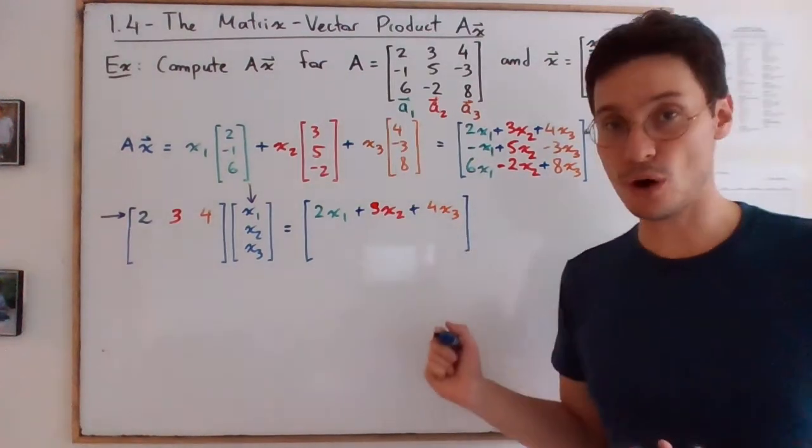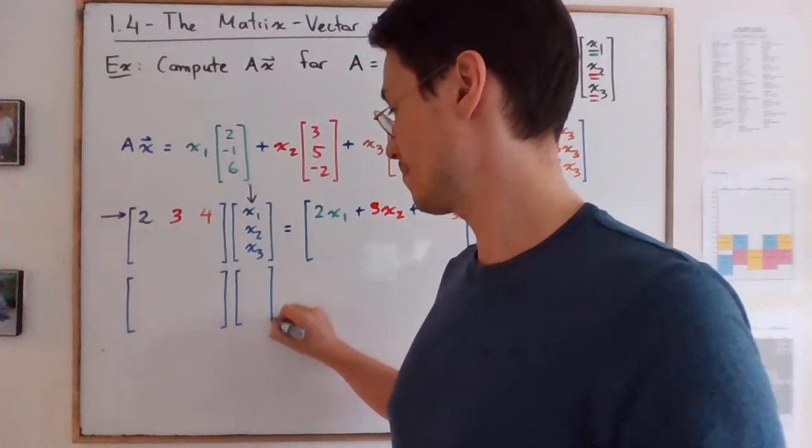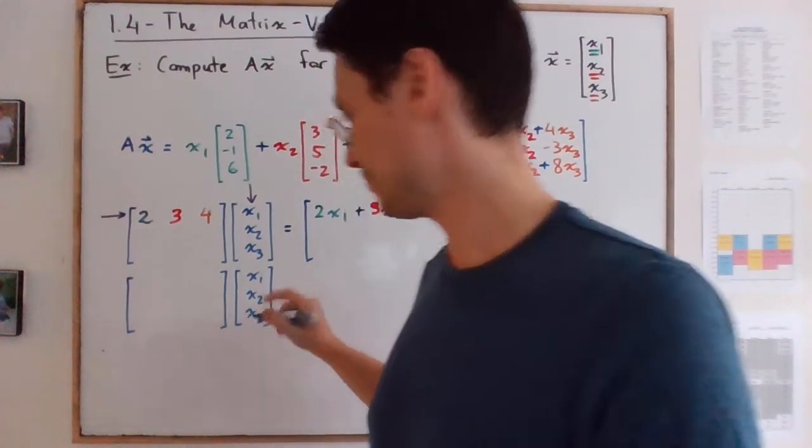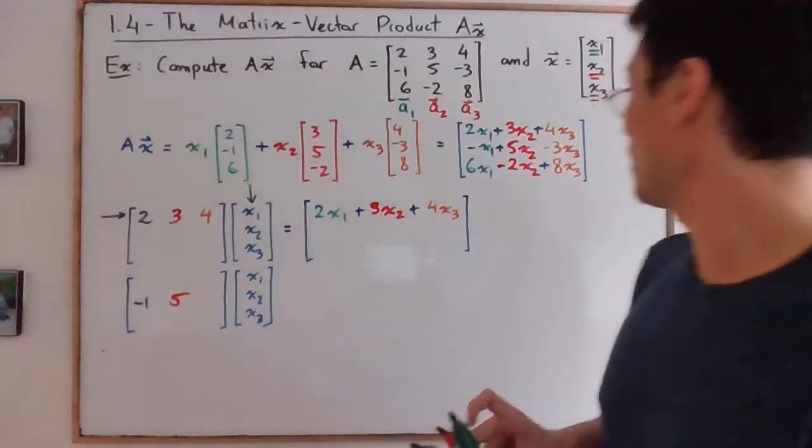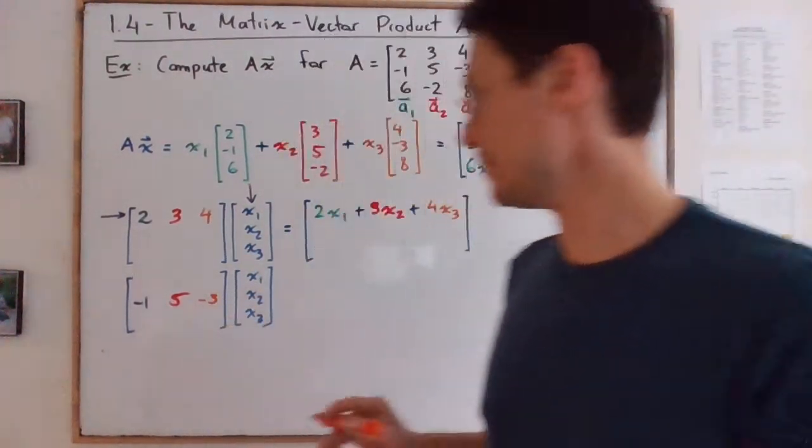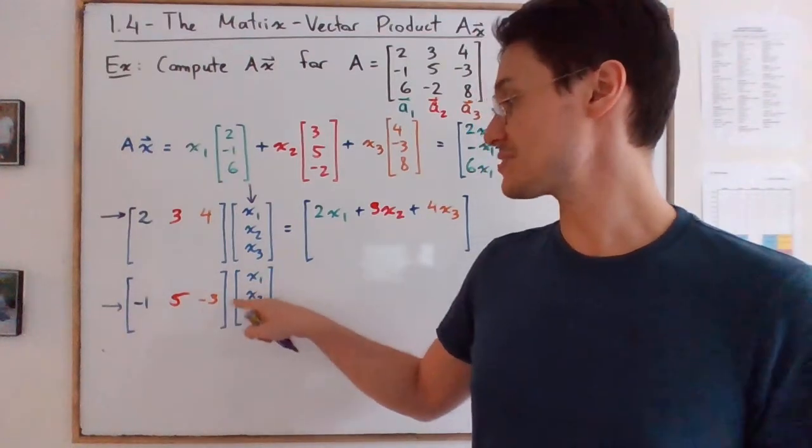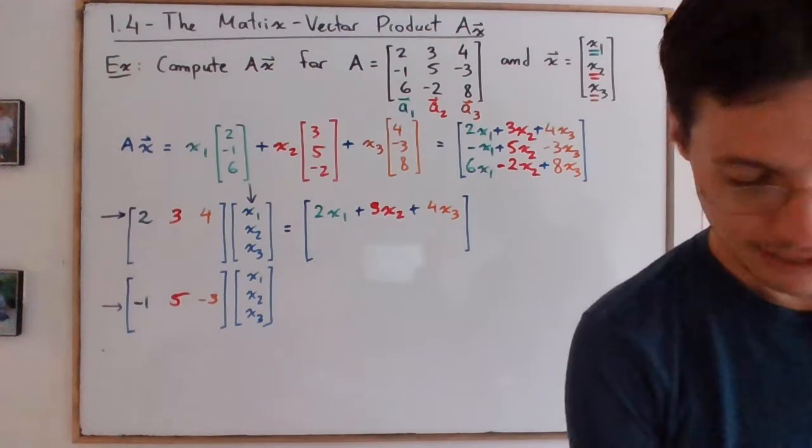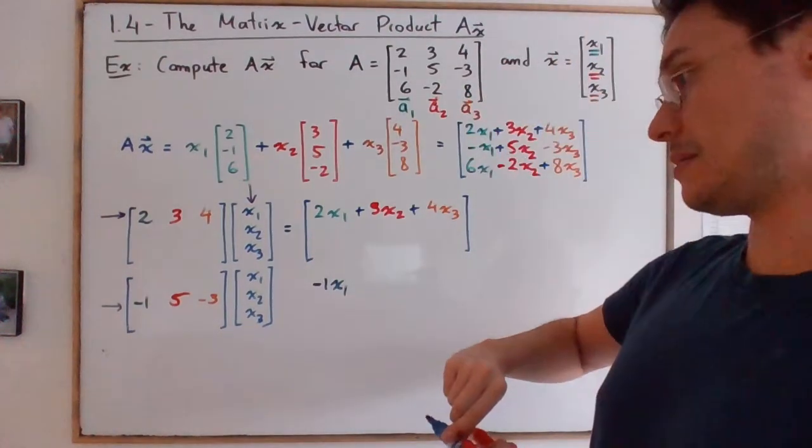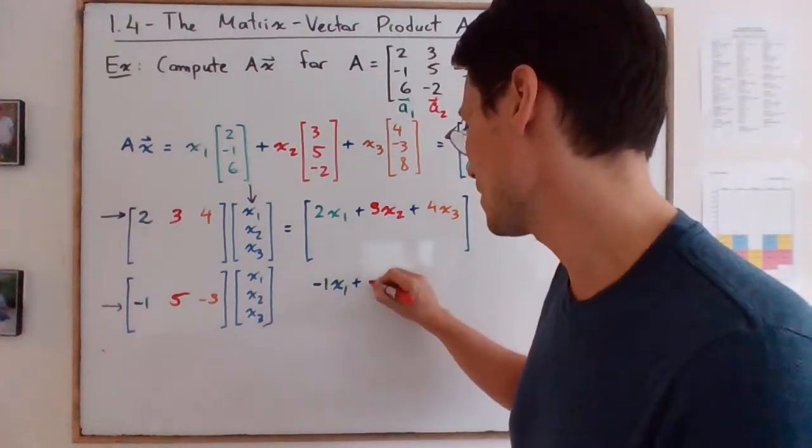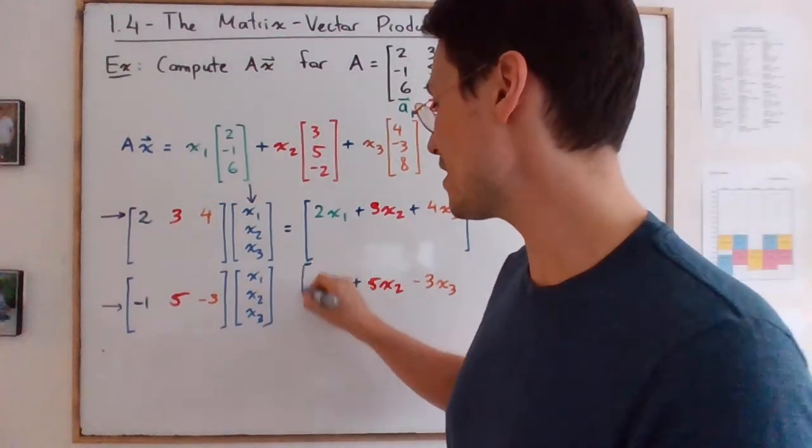And if you look at the other two rows, you will notice the same pattern. So if we do the second row, for instance, you have x1, x2, x3, and then the second row is -1, 5, and -3. So what's going to happen is we're going to multiply together the -1 and the x1, the 5 and the x2, and the -3 and the x3. So we're going to get -x1 plus 5x2 minus 3x3, and this will be the second row.